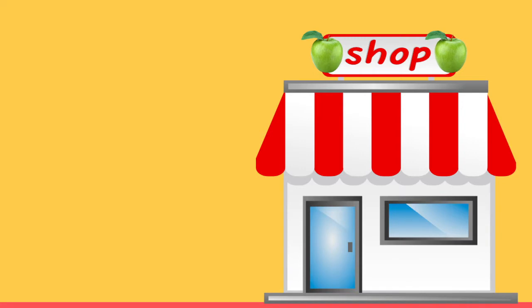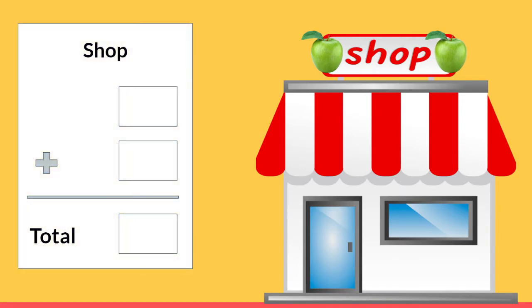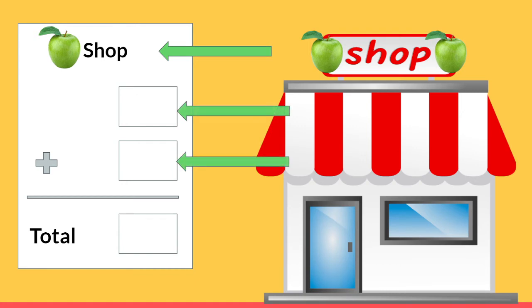When we go to a store we often get a receipt. At the top of the receipt it will tell us the store's name, and our store's name is the fruit shop. On the receipt we will have places that tell us what we bought and how much they cost, and then we add all that together to give us the total.